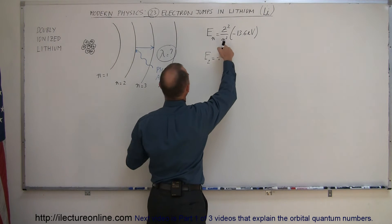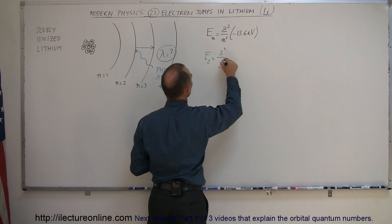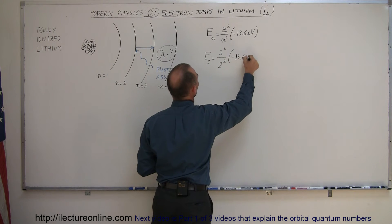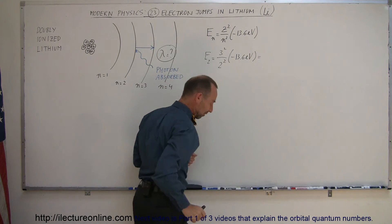And then we divide that by, of course, we're dealing with the second level, so this would be 2 squared times minus 13.6 electron volts. Let's see what that is equal to.